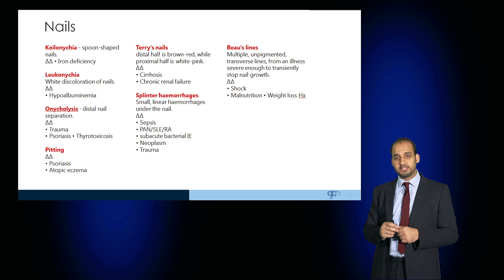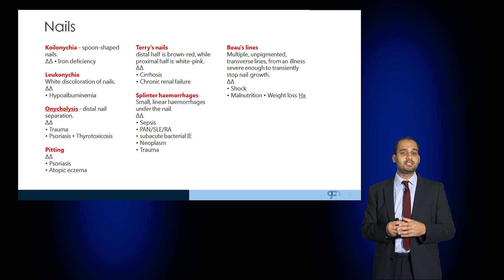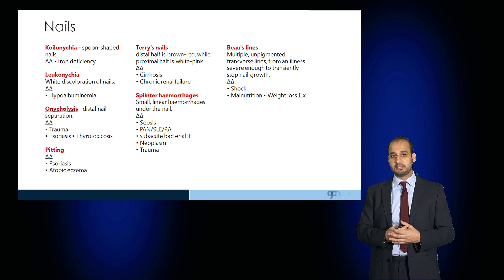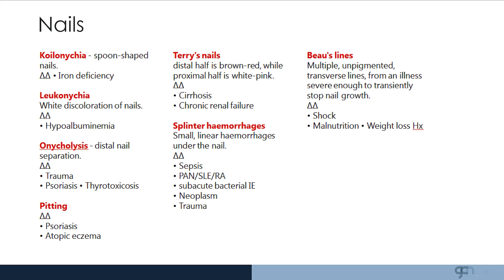Splinter haemorrhages may be seen. These are small linear haemorrhages under the nail as a result of sepsis, vasculitides, subacute endocarditis, or neoplastic or traumatic disease. Beau's lines are multiple unpigmented transverse lines and these can occur due to severe illness which transiently arrests nail growth, and this can be due to malnutrition.